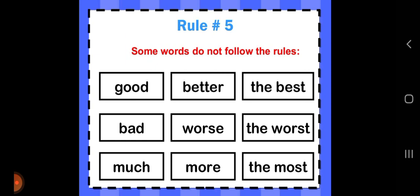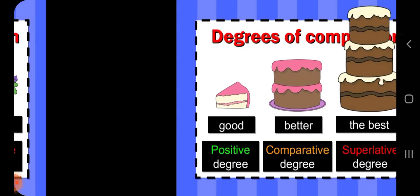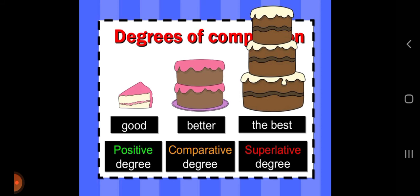Some words do not follow the rules. Good becomes better in comparative degree and best in superlative degree. Bad stays bad in positive degree, becomes worse in comparative, and worst in superlative. Much becomes more, the most. Bad, worse, the worst. Good, better, the best.